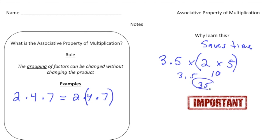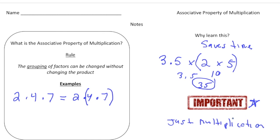Really important: this property only works for just multiplication. There's no such thing as the associative property of subtraction or the associative property of division.